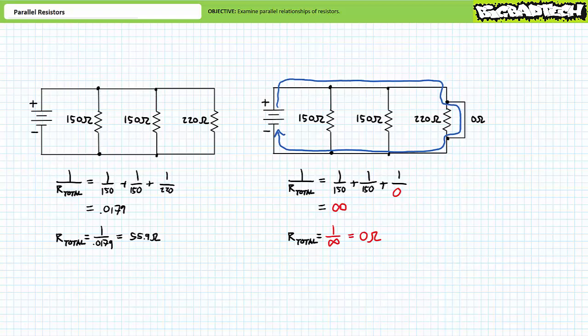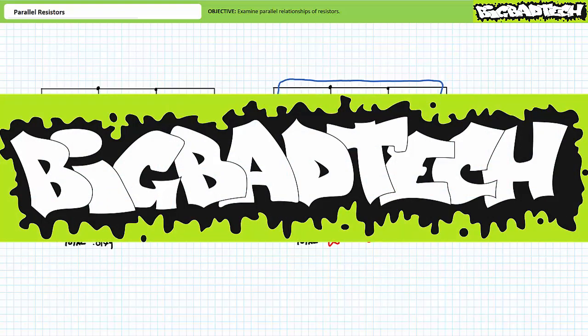That's about it for today. In conclusion, this lecture took a look at parallel or side-by-side configurations of resistors. We learned the total resistance of a parallel combination is always less than the smallest resistor in the relationship. We also discussed the influence of order, identical resistors, abnormally large and small resistors, and the influence of shorts and opens inside parallel circuits. Remember to review these concepts as often as needed. Thank you for your attention, and we'll see you in the next lecture. Be sure to check out the Big Bad Tech channel for additional resources and updates.